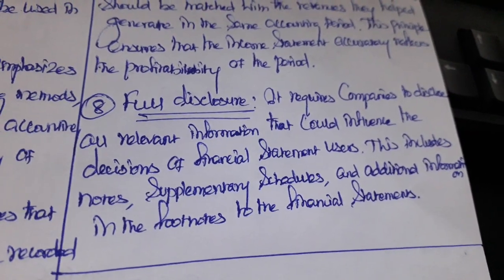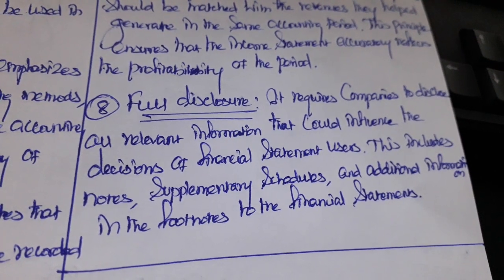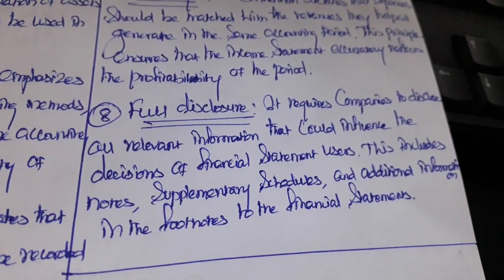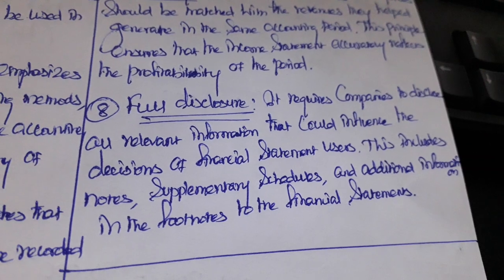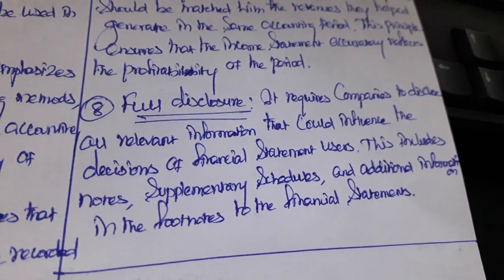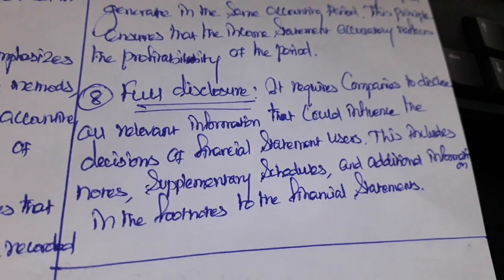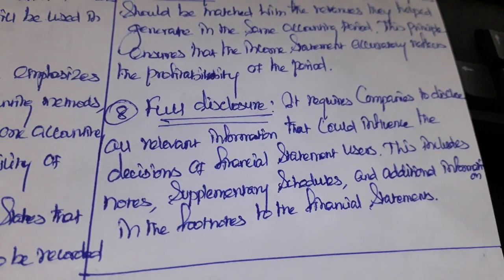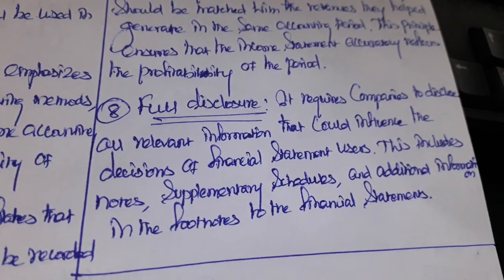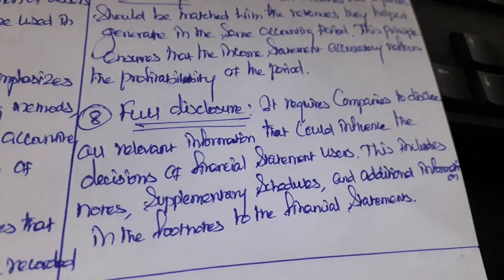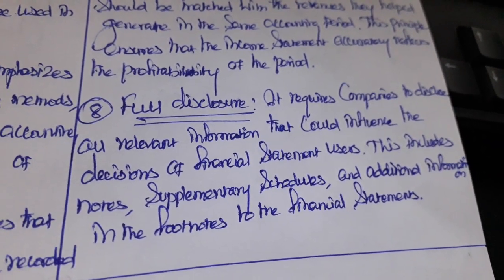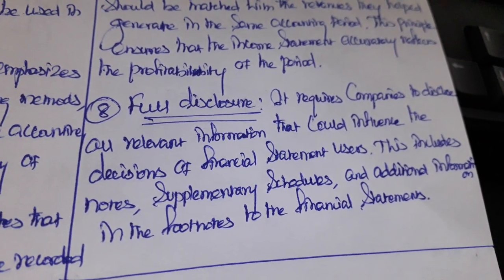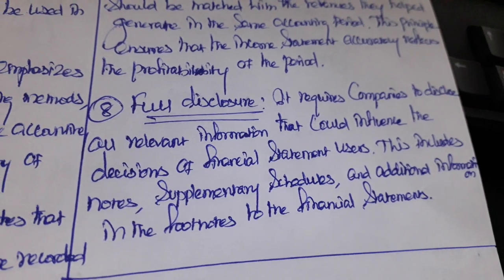Full disclosure requires companies to disclose all relevant information that could influence the decisions of financial statement users. This includes notes, supplementary schedules, and additional information in the footnotes to the financial statements. This convention is about disclosing all financial information to end users deliberately, and all such notes and schedules serve as evidence of correctness.